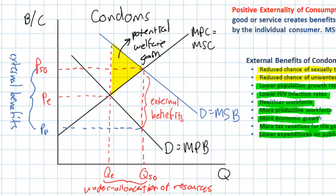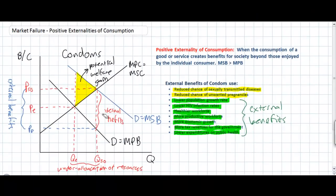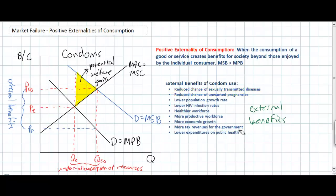How can we enjoy this increase in total welfare in the market for condoms and society as a whole? One way to do this would be through positive advertising. In previous lessons, we have talked about the use of taxes and subsidies to encourage or discourage the production of a good. In this case, what we're going to talk about instead is the use of positive advertising to encourage the consumption of a good.